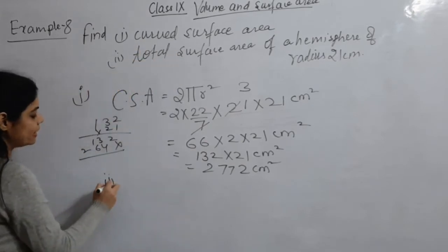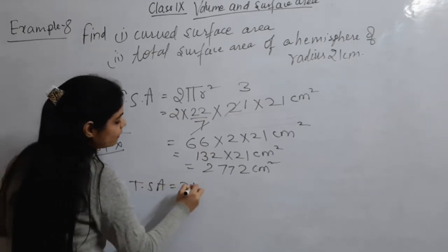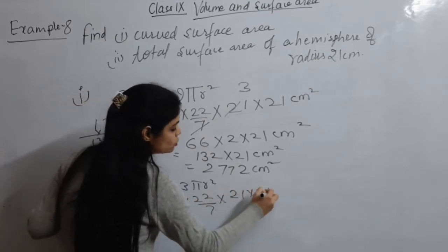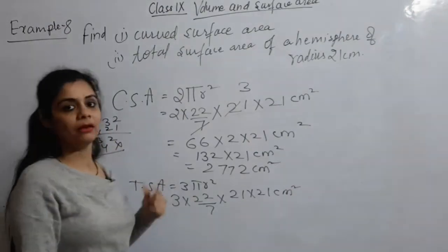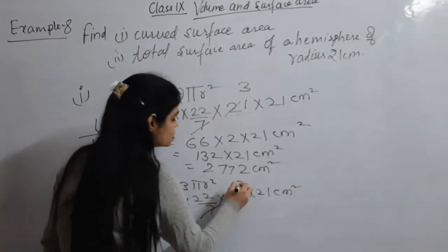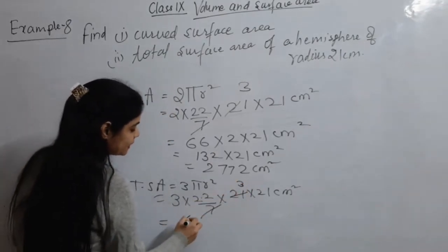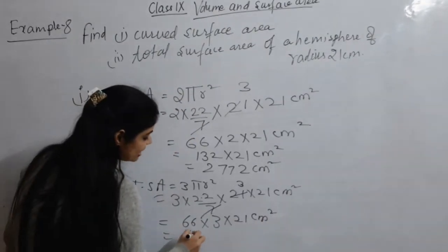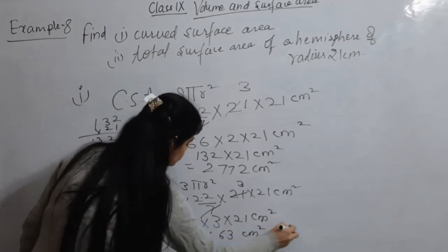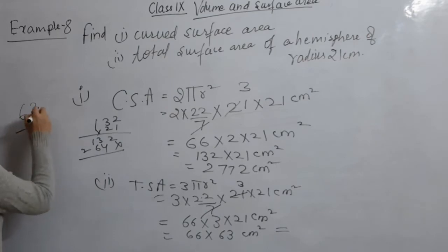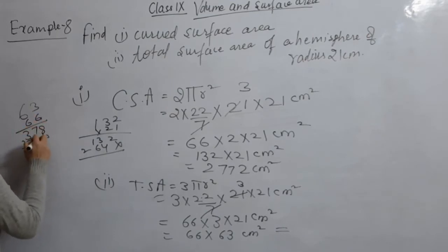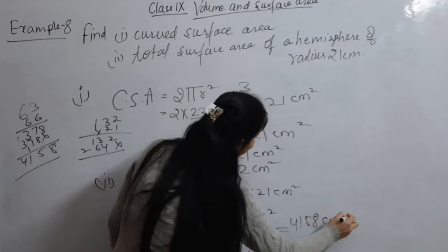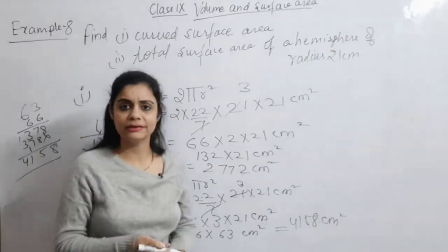Now for total surface area = 3 π r² = 3 × (22/7) × 21 × 21 cm². Again 7 threes are 21, so 66 × 3 × 21. That gives us 198 × 21 = 4158 cm² as the answer for total surface area. So it was just a formula application with given values.